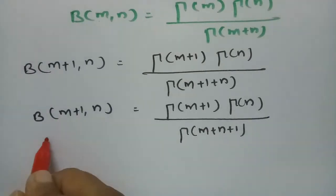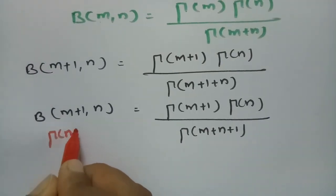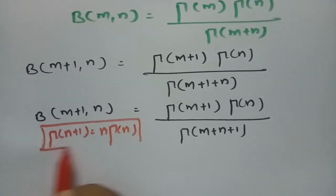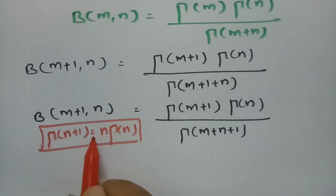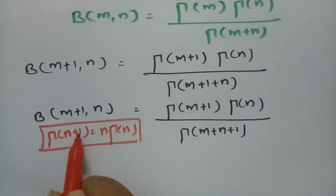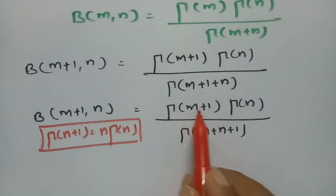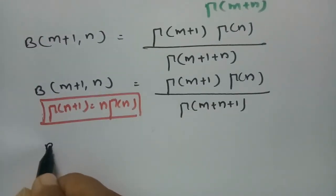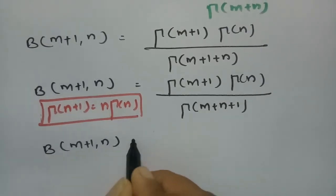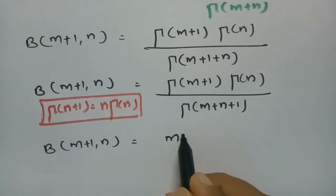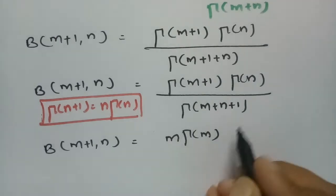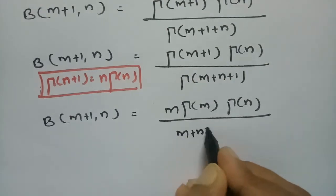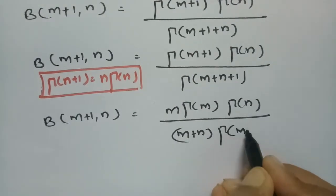We know that gamma of n plus 1 equals n times gamma n. This is a property of gamma functions. Using this property, gamma of m plus 1 can be written as m times gamma m, and gamma of m plus n plus 1 can be written as m plus n times gamma of m plus n. So beta of m plus 1 comma n becomes m times gamma m times gamma n by m plus n times gamma of m plus n.